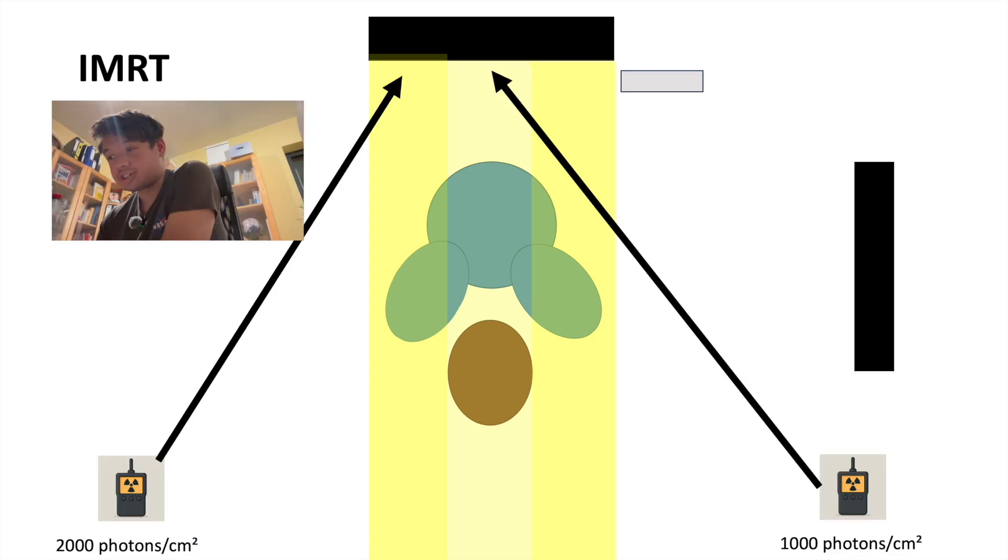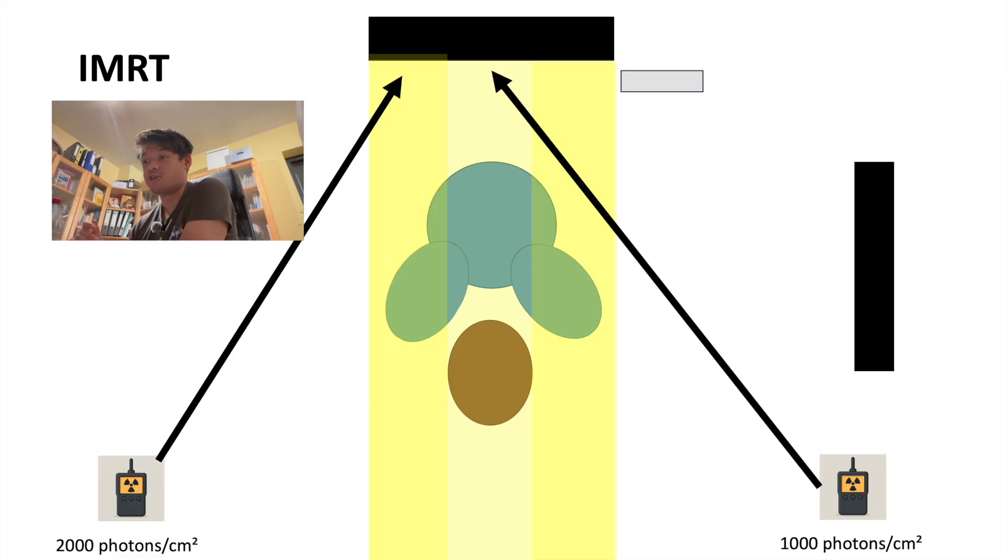With IMRT, the fluence is no longer uniform across the field. If we place a detector here, we might measure 2000 photons per cm², while in another area, we could measure only 1000 photons per cm². This variation in fluence allows us to tailor the dose distribution, delivering more dose where needed and less where we want to spare healthy tissue.